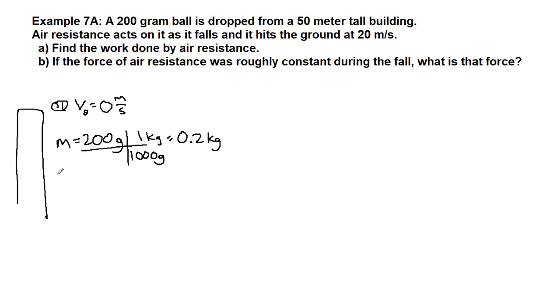The 50 meter tall building, we have used that as y or y initial in the past, but we are going to be calling it h for height here in chapter 7. Air resistance acts on it as it falls and it hits the ground at 20 meters per second. So here at the ground, the final velocity is 20 meters per second.